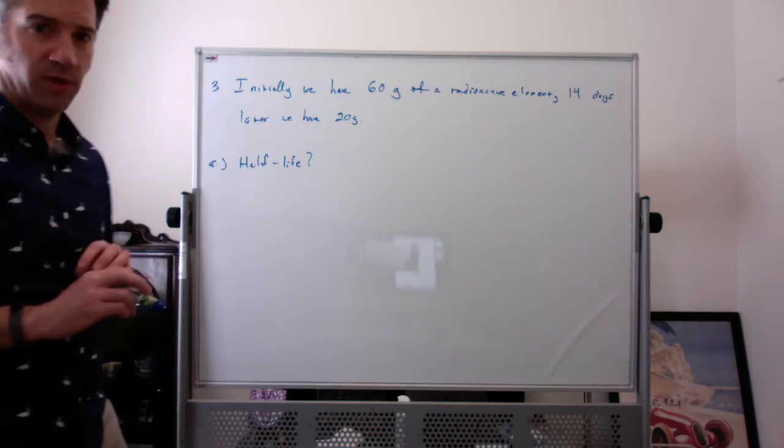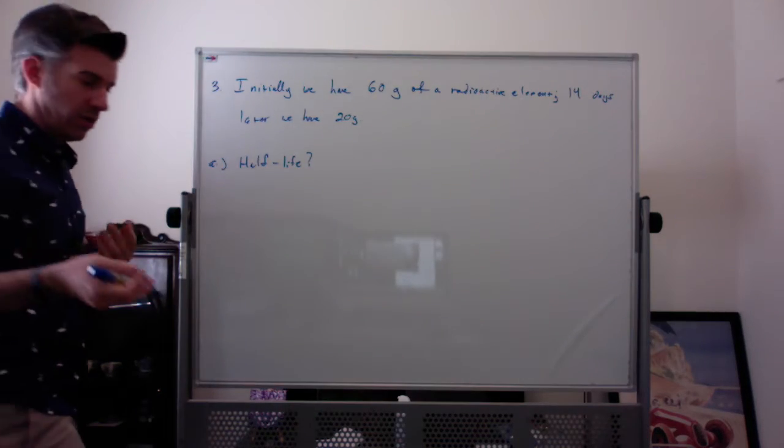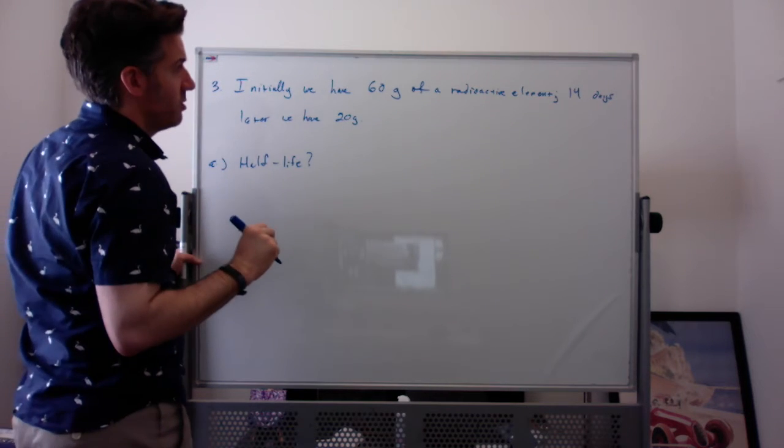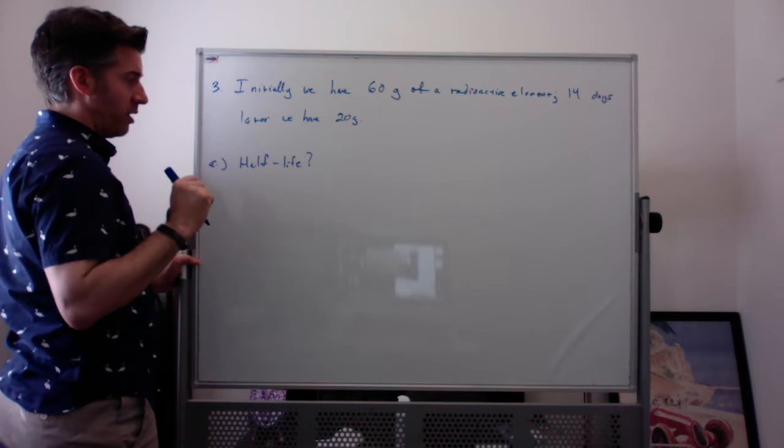There's a radioactive decay problem, which is problem 3 from the midterm review for FAML. Initially, we have 60 grams of a radioactive element. 14 days later, we have 20 grams.